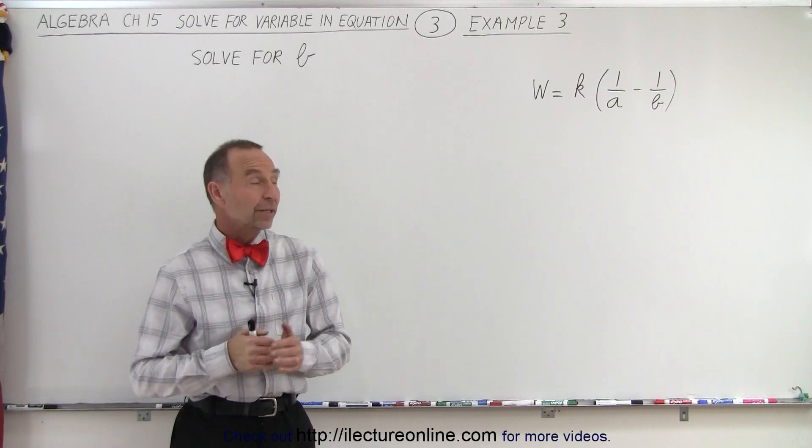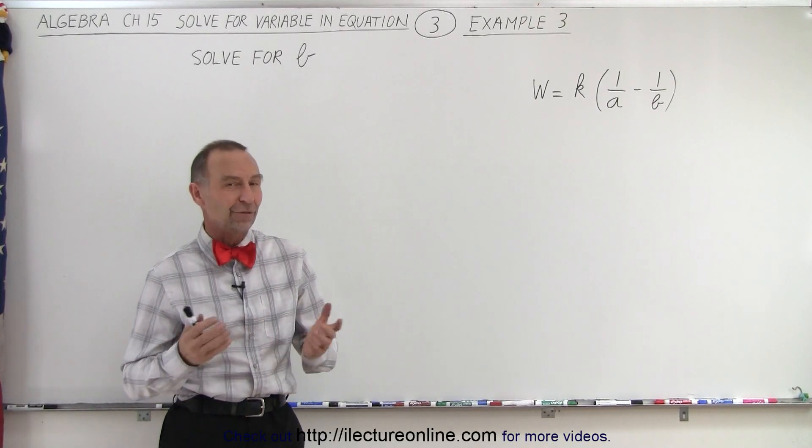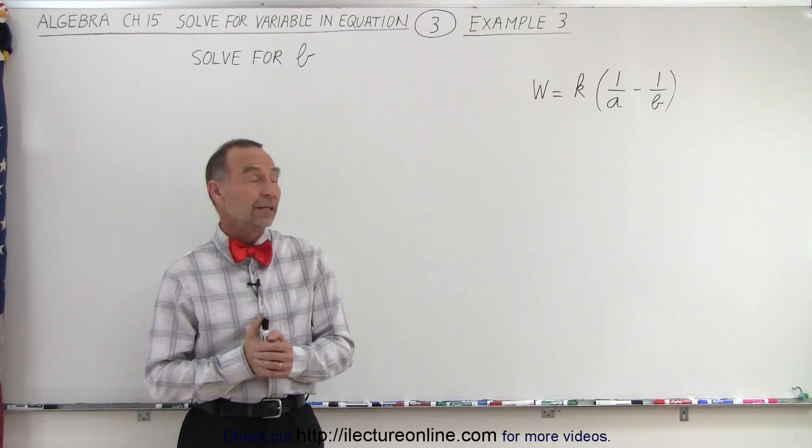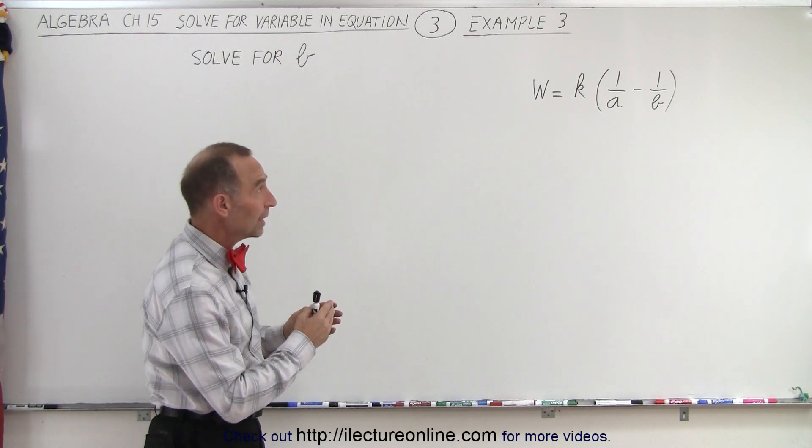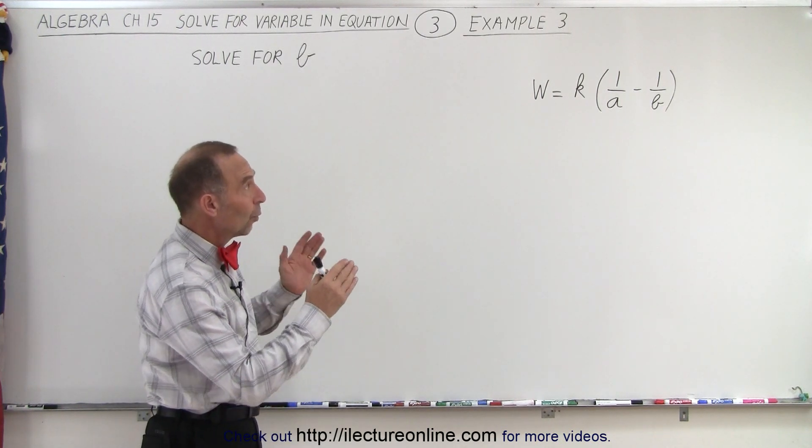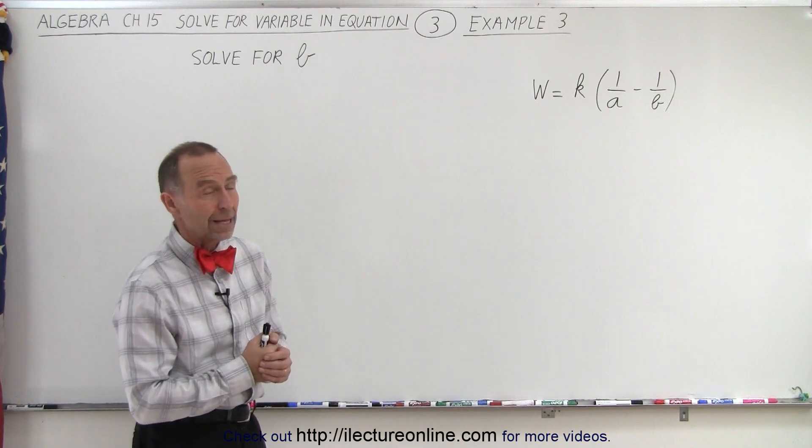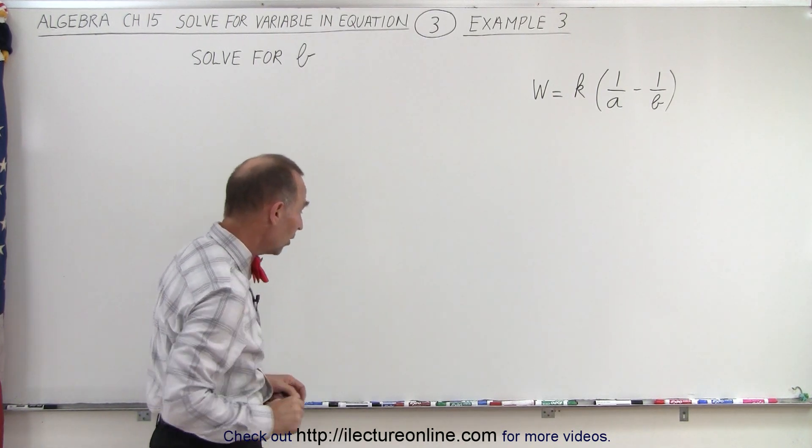Welcome to Electronline. Our next example is not as simple as the first two that we've tried so far. Notice on the right side we have the quantity k times 1 over a minus 1 over b, and we're supposed to solve for b.